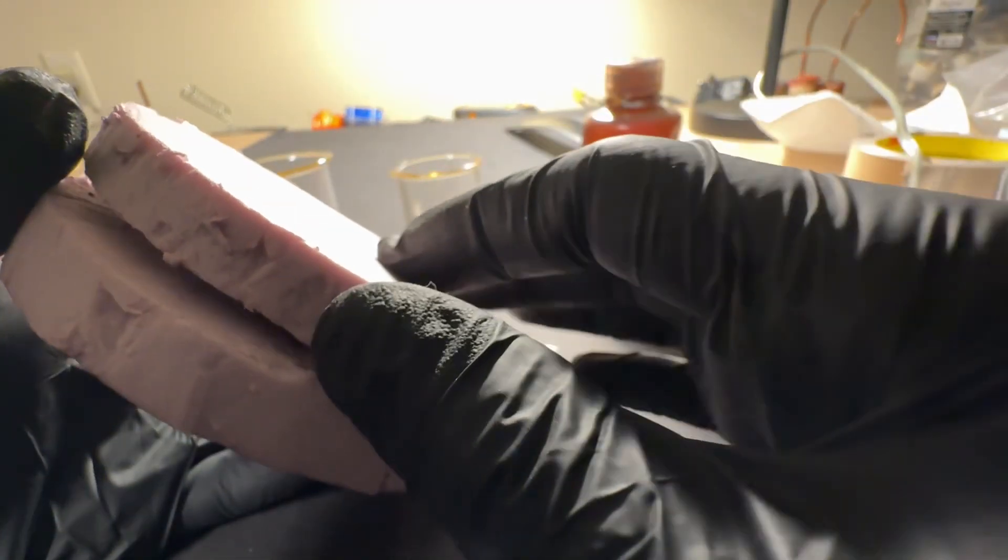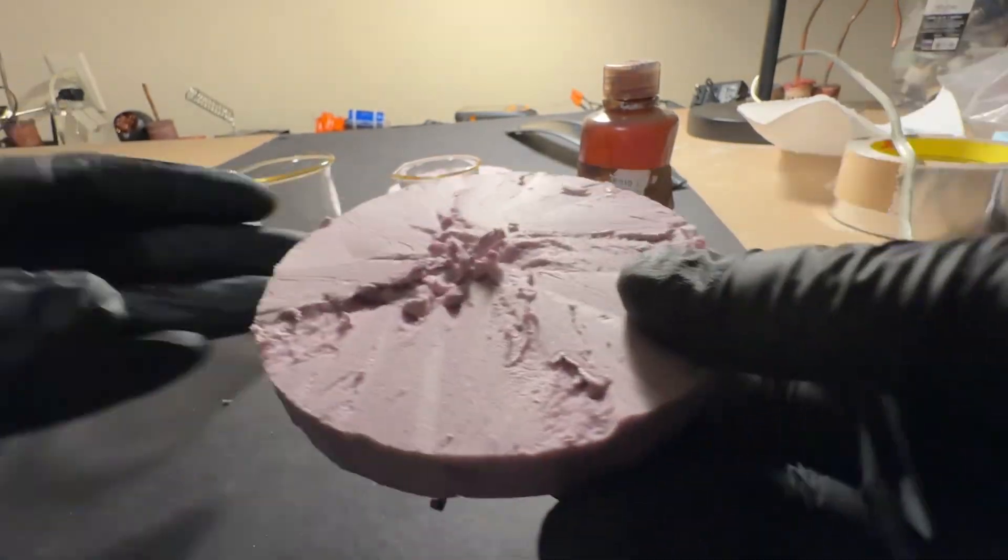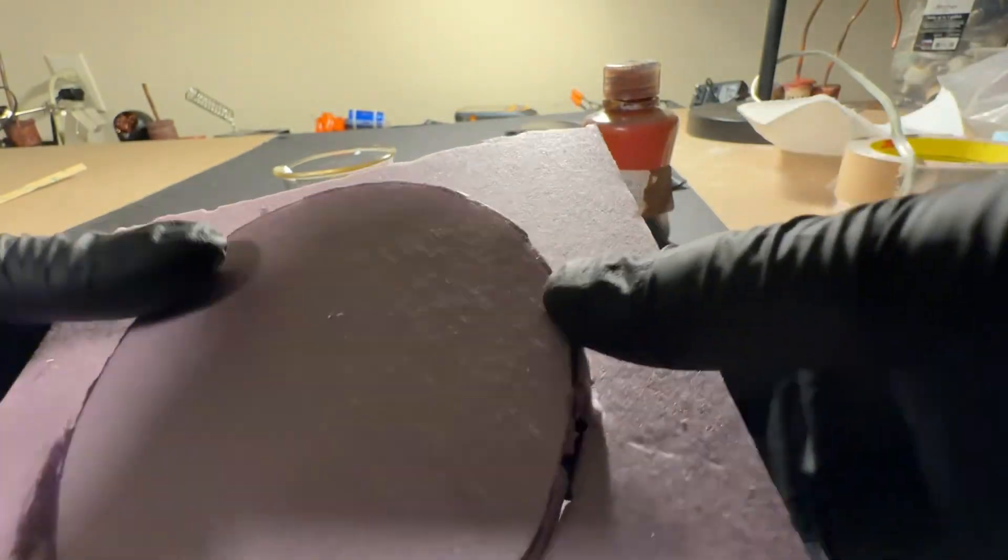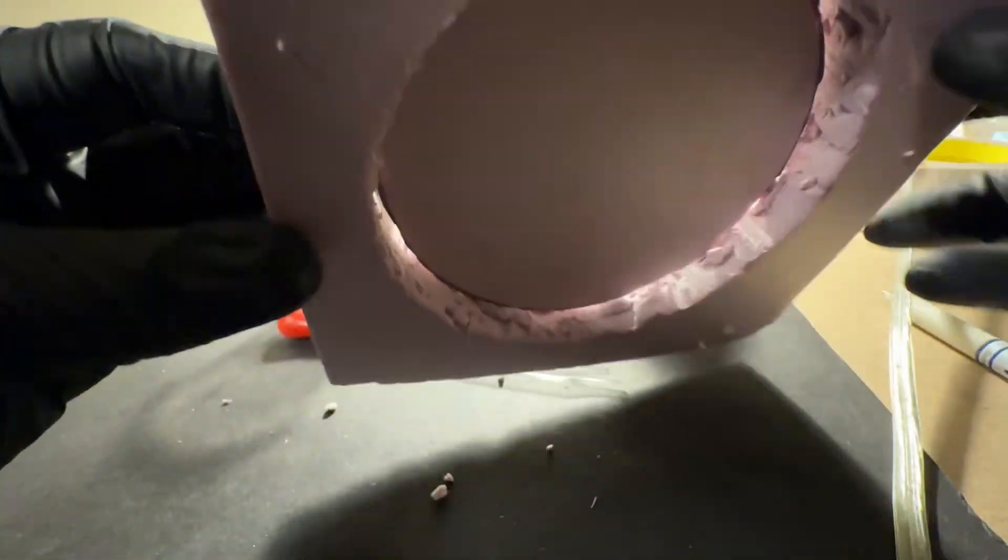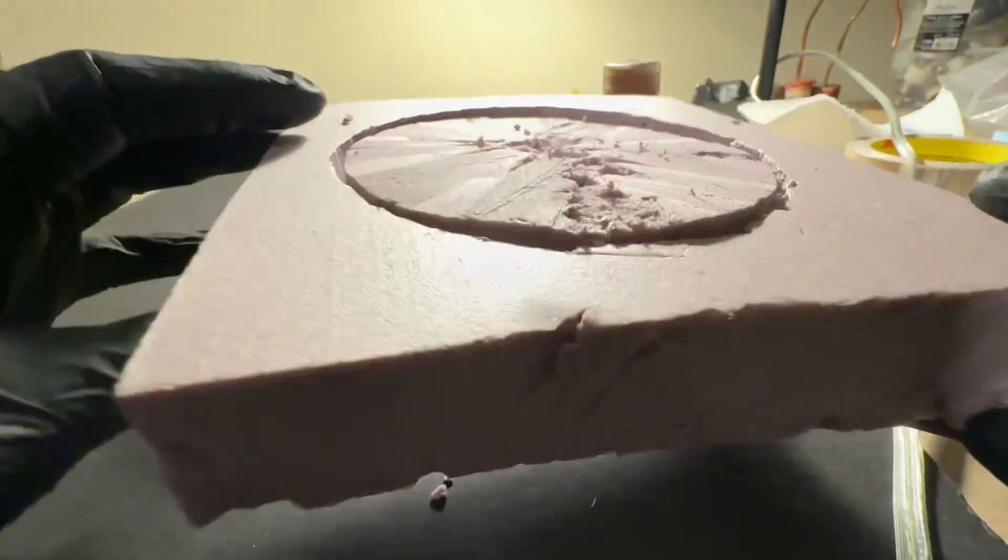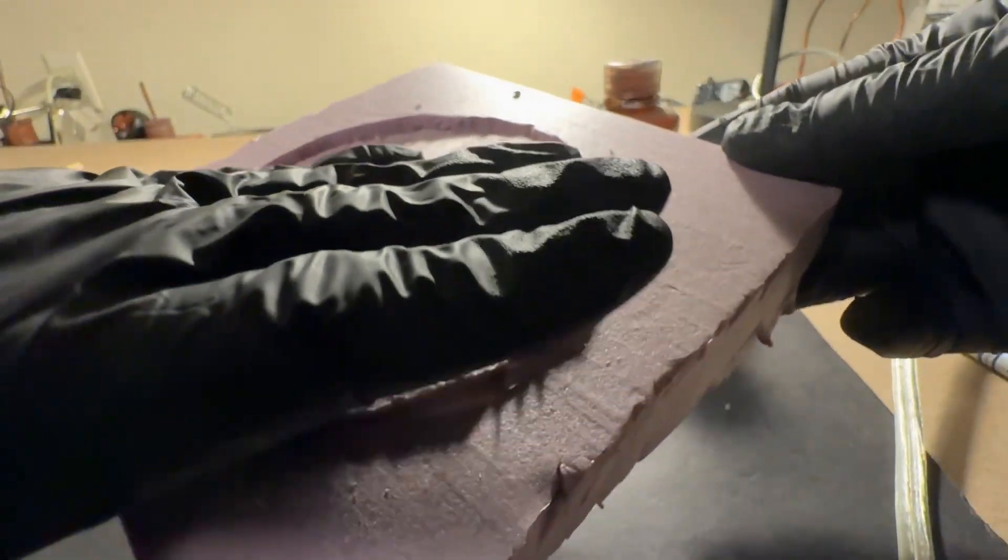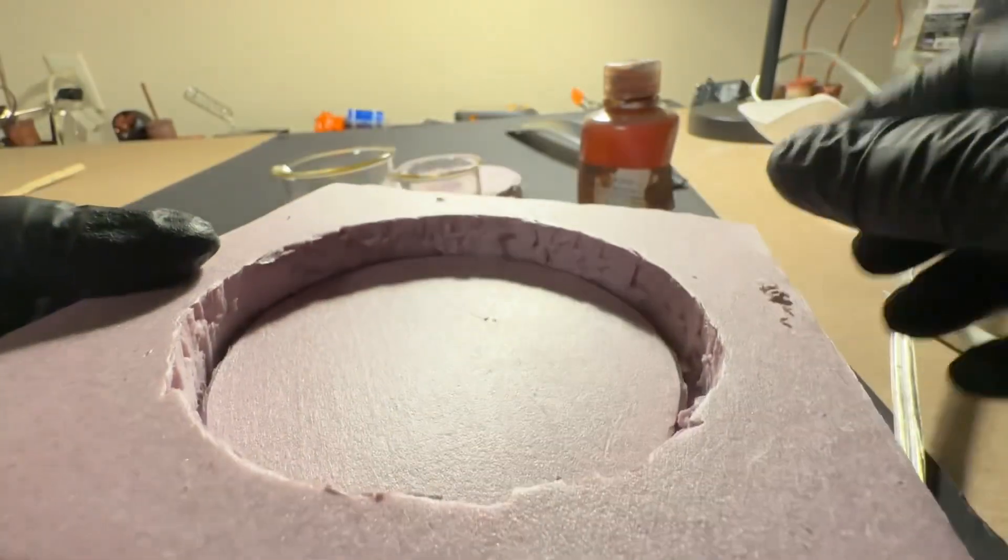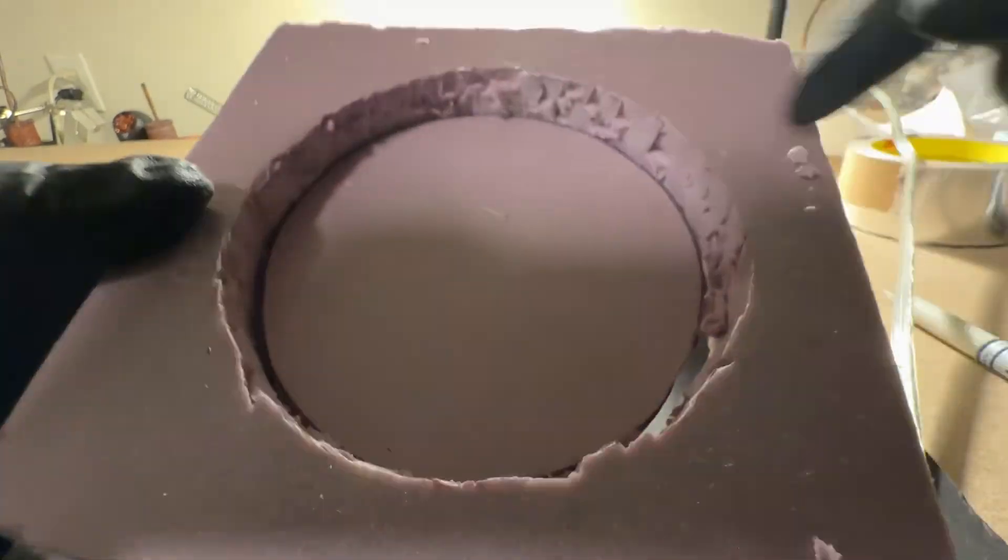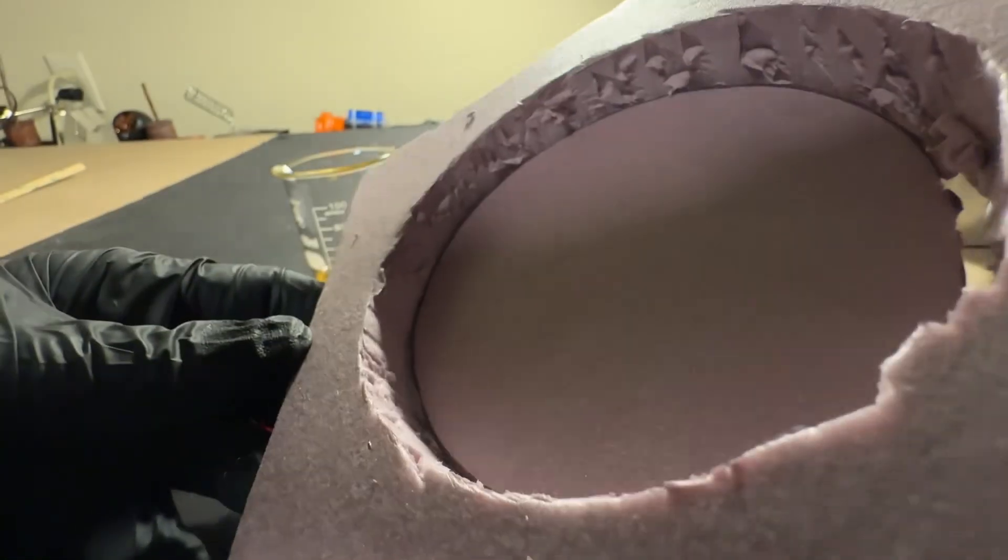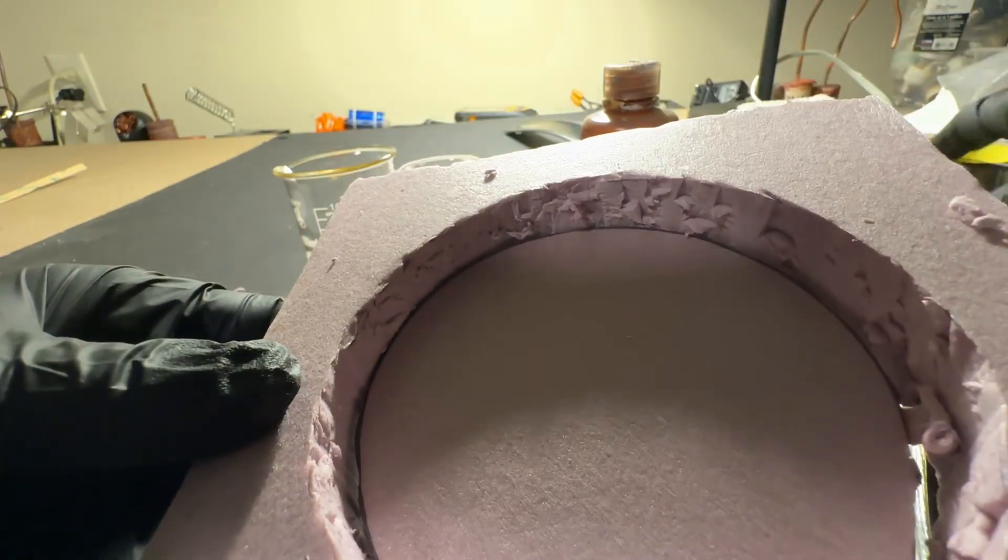What you're going to do with this disc is you're going to put it back in here like this and push it all the way down so that it's flush with the other side. Then you're going to place a layer of tape over this so that it's completely flush and even. Before you do that you're going to want to tape around the edges of this to smoothen it up because see how rough that is? You're going to want to smoothen that up with adhesive aluminum tape.